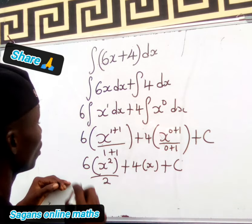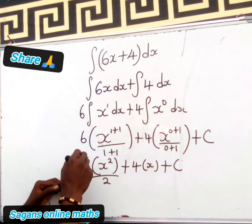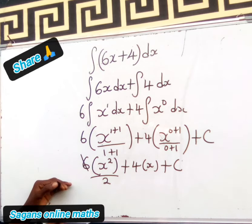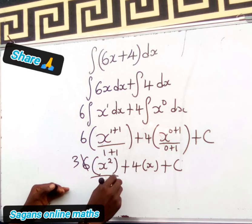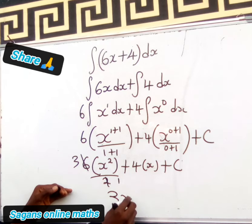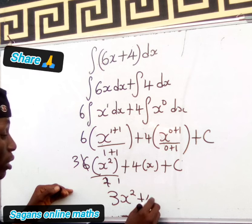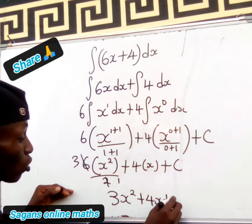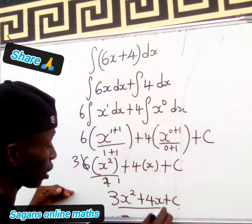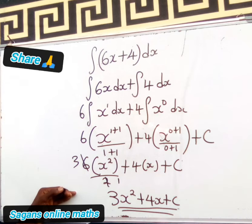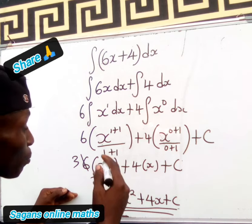2 into 6, every time 2 goes into 6, 3 times. So this is 3x to the power of 2 plus 4x plus C. And this is the final solution to this particular problem. See how simple and interesting it is.